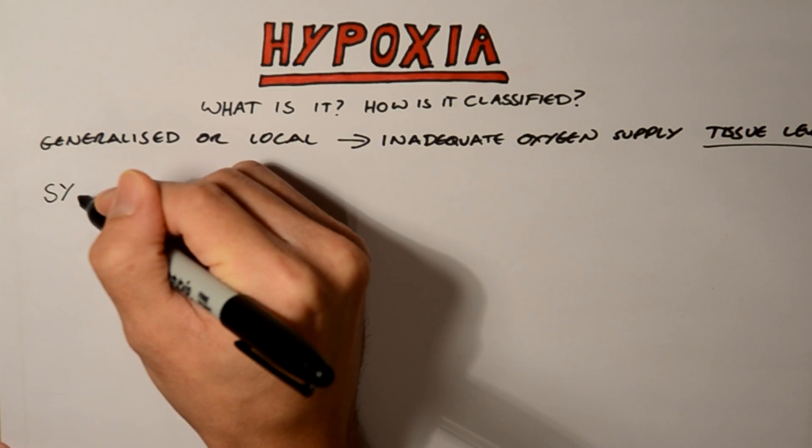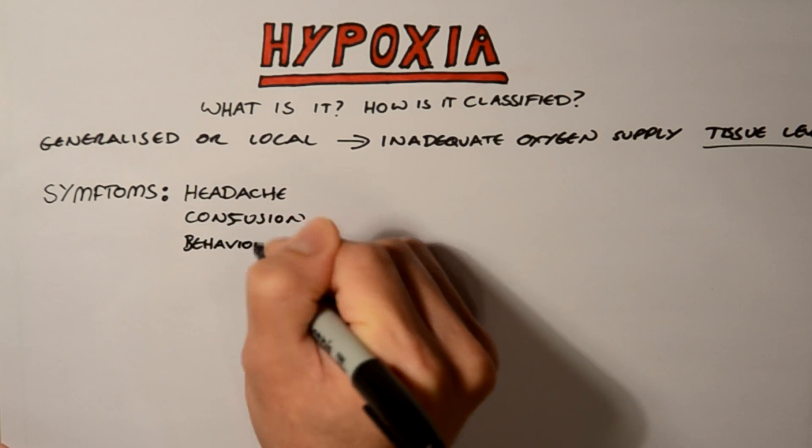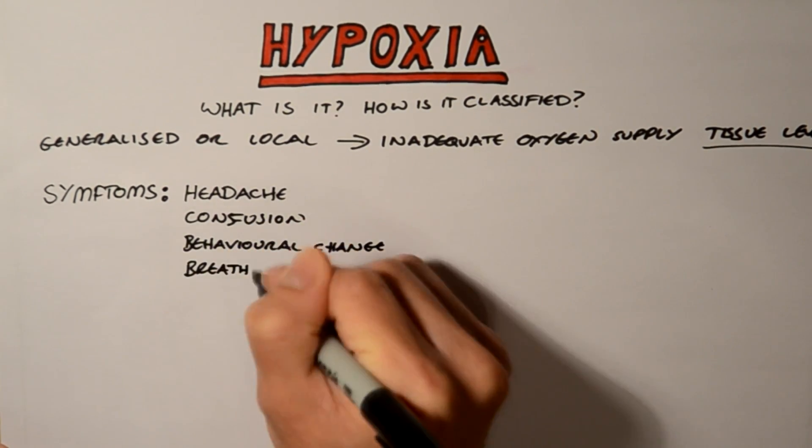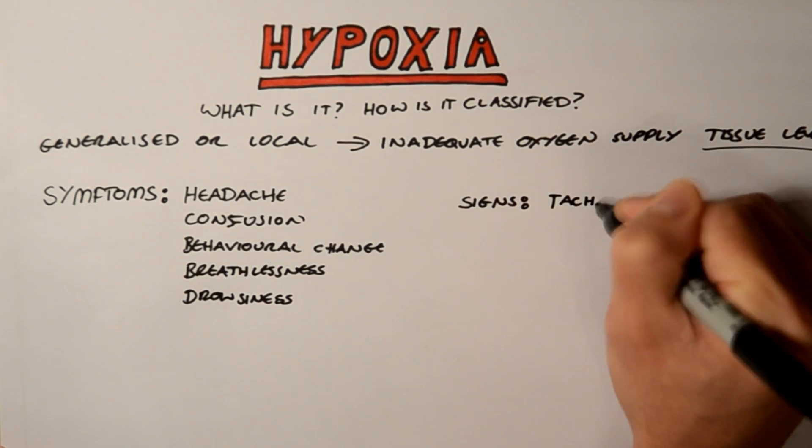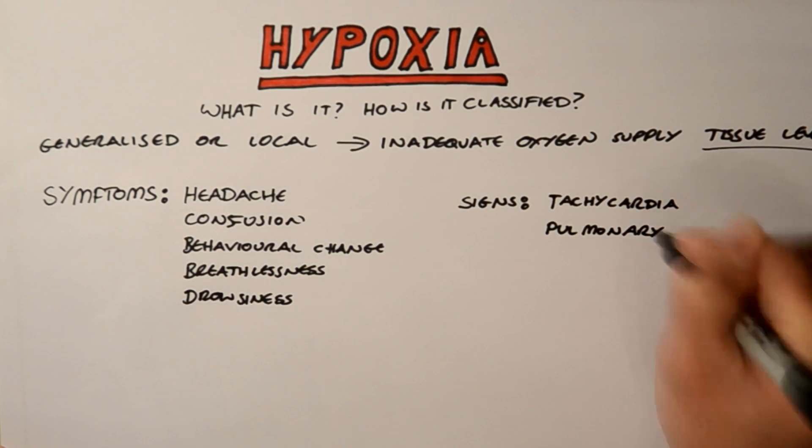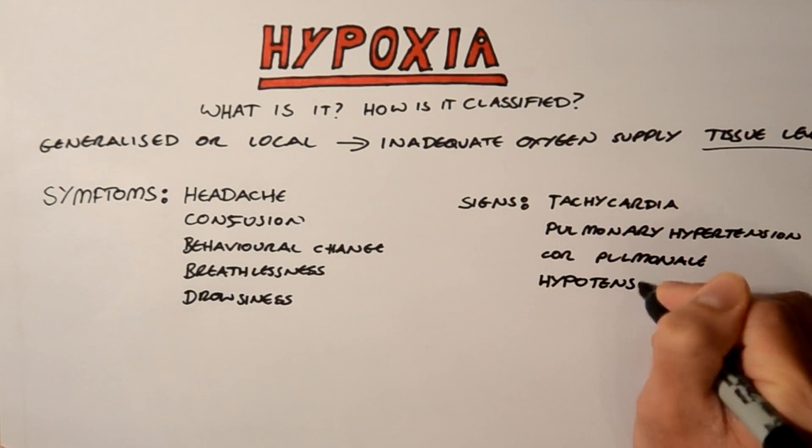It will cause many symptoms such as headache, confusion, behavioural change, breathlessness or drowsiness, and then signs such as tachycardia, pulmonary hypertension, cor pulmonale, arrhythmia and death.